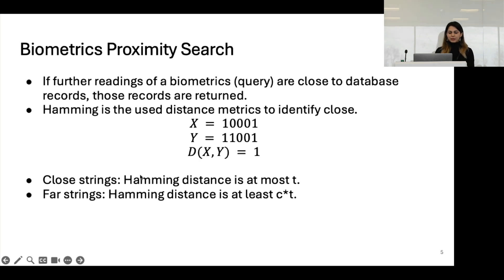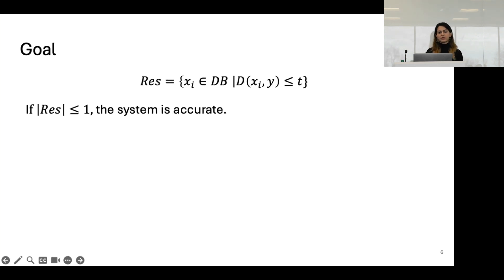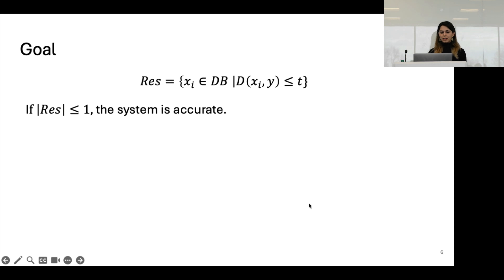When defining close strings, we mean their Hamming distance should be less than a threshold t. When defining far strings, we mean their Hamming distance should be at least c times that threshold t, where c is some value greater than 1. The goal of biometric search is to return any record in the database that is within threshold distance of the query value.